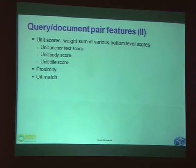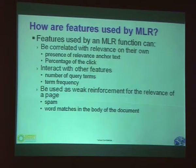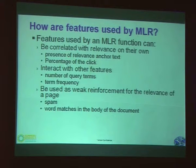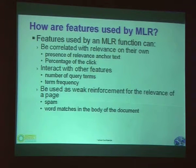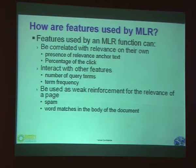There are some other features. For example, there is URL matching — given a query, sometimes there is matching between the query and the URL, and this type of information provides extra signals. So how are the features used by machine learning ranking? The features are correlated with learning targets and provide the presence of relevance anchor score and the percentage of clicks. They also interact with other features, such as number of query turns and turn frequencies, and can be used as a weak reinforcement signal for the relevance of a page.